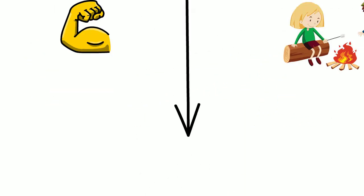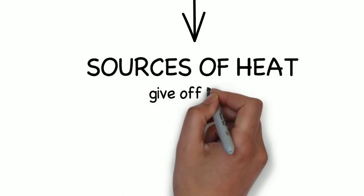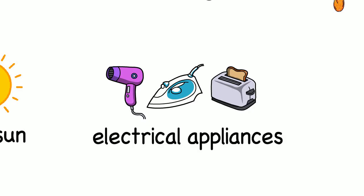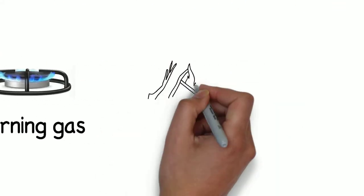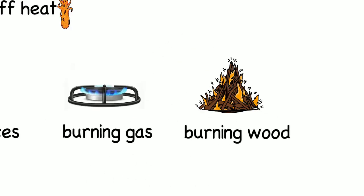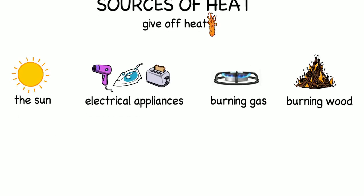Things called sources of heat are those that give off heat. Let's see some examples: the sun, these electrical appliances, burning gas, and burning wood. All these give off heat and can be natural, like the sun, or artificial.